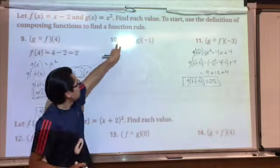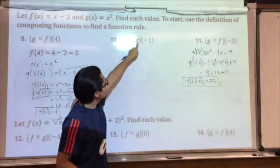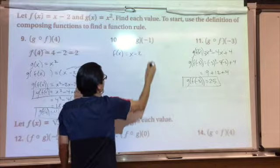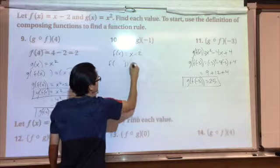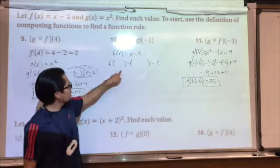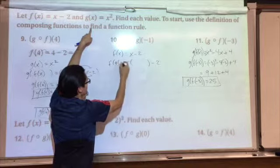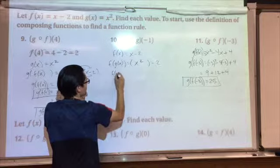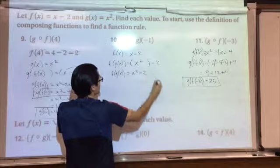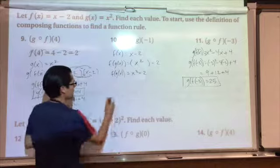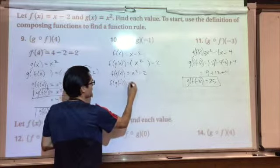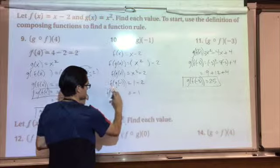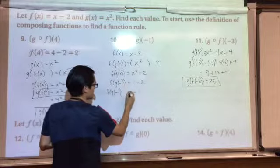Number 10. This was telling me to do the composition of f with g, meaning I'm going to substitute g into f. So I start by writing out f of x, which is f of x equals x minus 2. Take out the x, only the x, and in its place plug in g. g of x on the left side and x squared on the right side. So f of g of x is x squared minus 2. Now all I've got to do is substitute in negative 1. f of g of negative 1 equals negative 1 squared, which is 1, minus 2, which is negative 1. f of g of negative 1 is negative 1. There's your final answer.